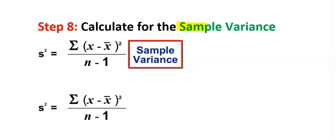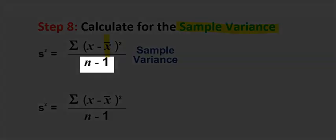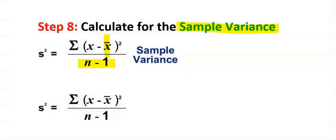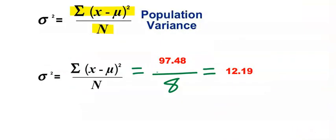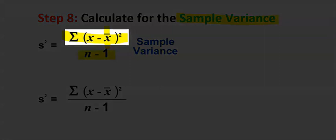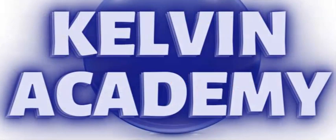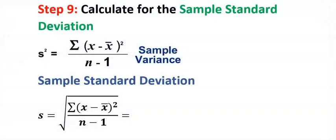In step eight, let's consider sample variance. The first thing to watch out for is that instead of mu we now have x-bar, and instead of capital N we now have small n minus one. However, the table answers do not change. The mean is now x-bar, and the variance is divided by eight minus one — that is the difference between population and sample.